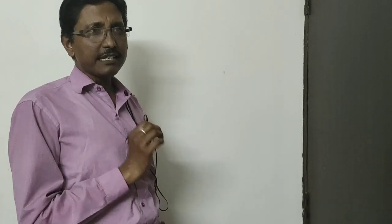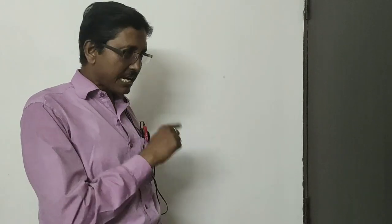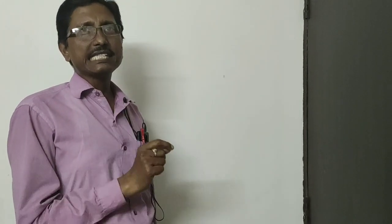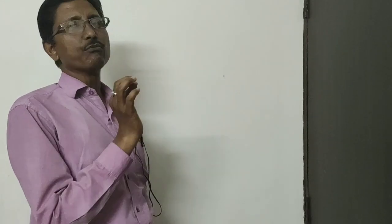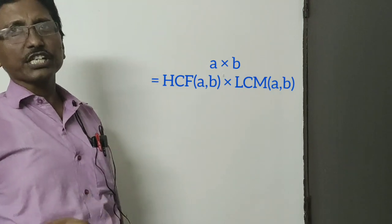One important result relating HCF and LCM is that the product of two numbers equals the product of their HCF and LCM. That is, for two numbers a and b: a × b = HCF(a, b) × LCM(a, b). You can find HCF by prime factorization or the division method and then use this relation.